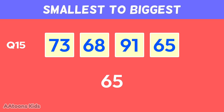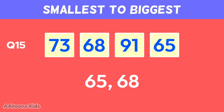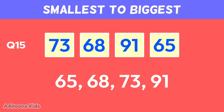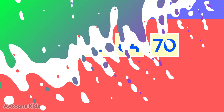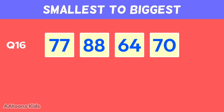Arrange these numbers from smallest to biggest: sixty-five, sixty-eight, seventy-three, ninety-one.